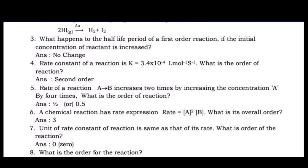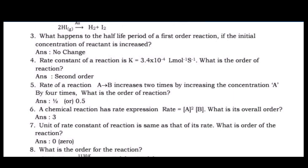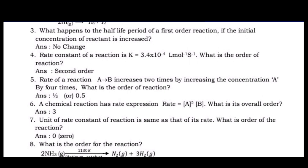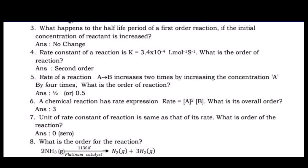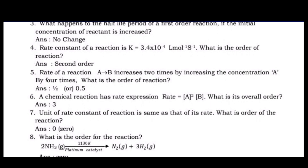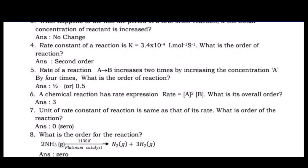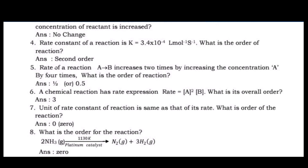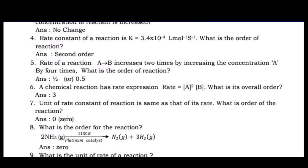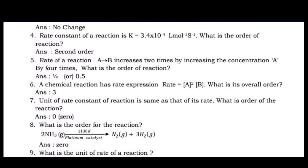Question 5: Rate of a reaction A → B increases 2 times by increasing the concentration of A by 4 times. What is the order of reaction? Answer: 0.5.